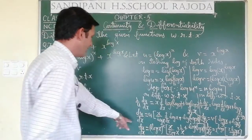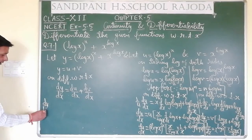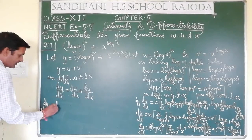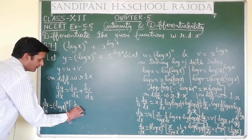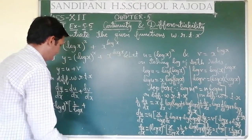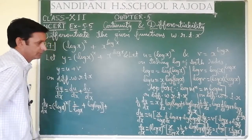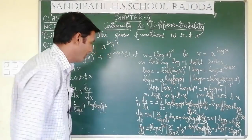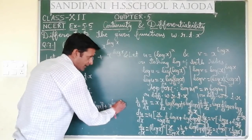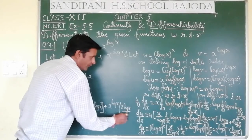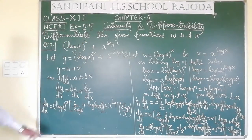So dv by dx equals x raised to the power log x, multiplied by 2 log x upon x. This part is solved. Now we can put dv by dx and du by dx into the main expression. So dy by dx equals du by dx — that is log x raised to the power x times (1 upon log x plus log(log x)) — plus x raised to the power log x into 2 log x upon x.